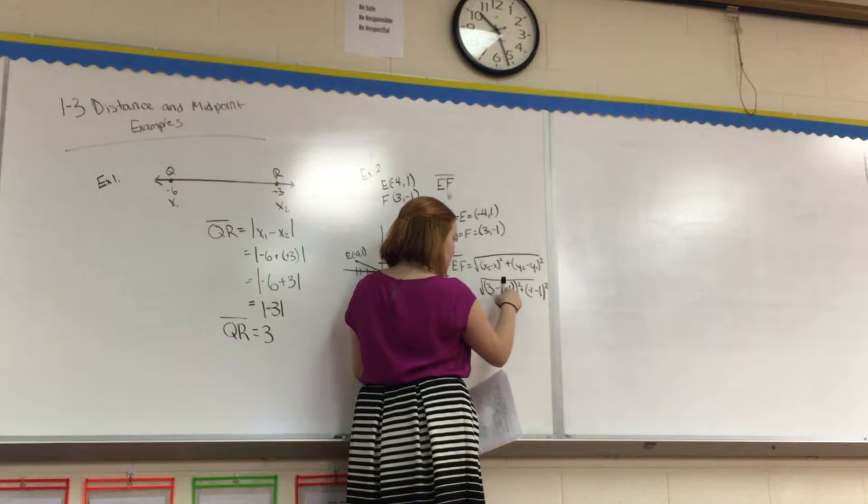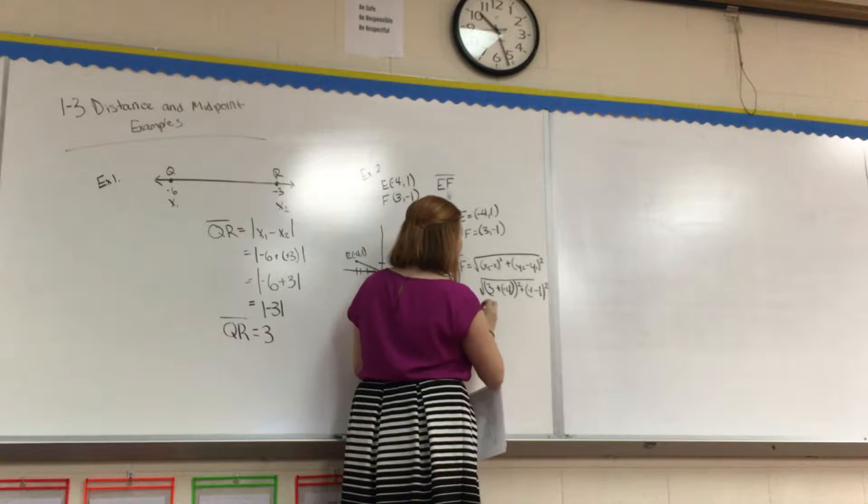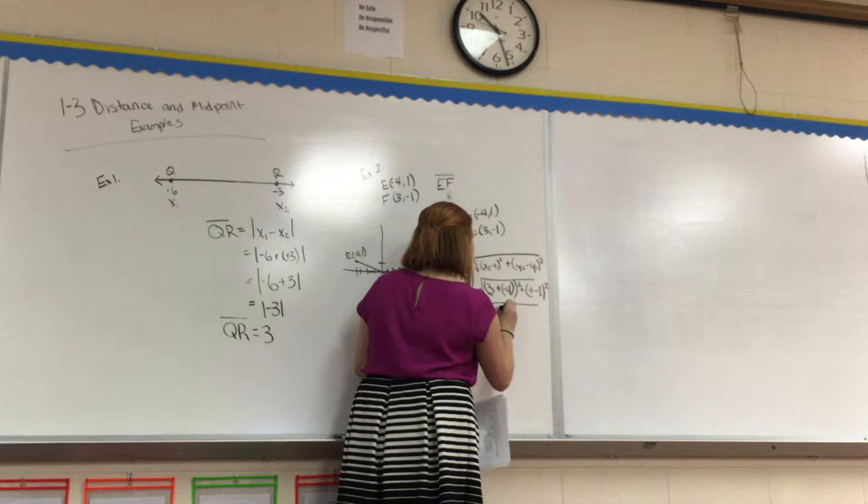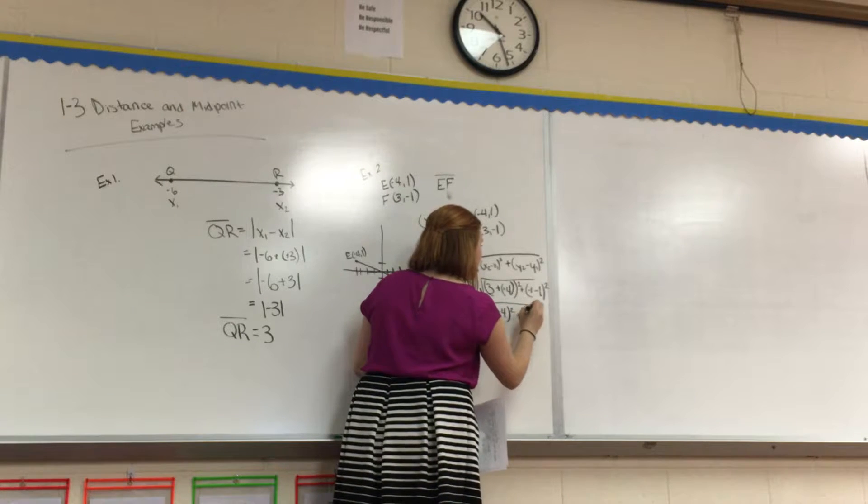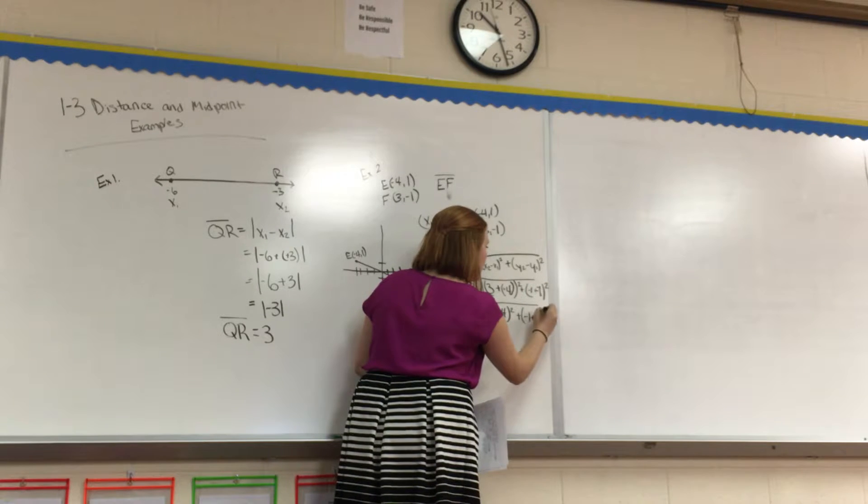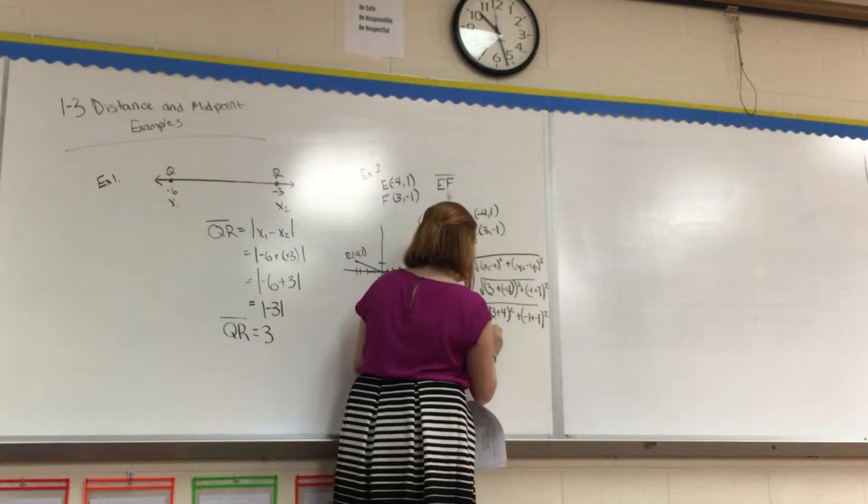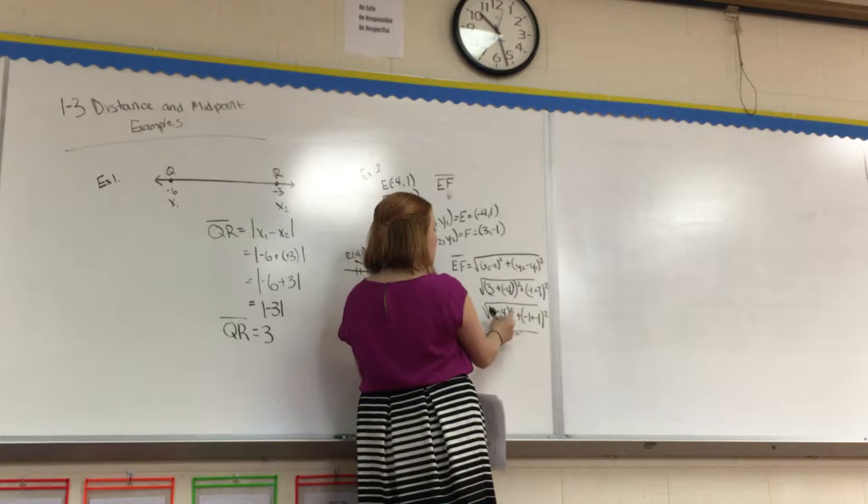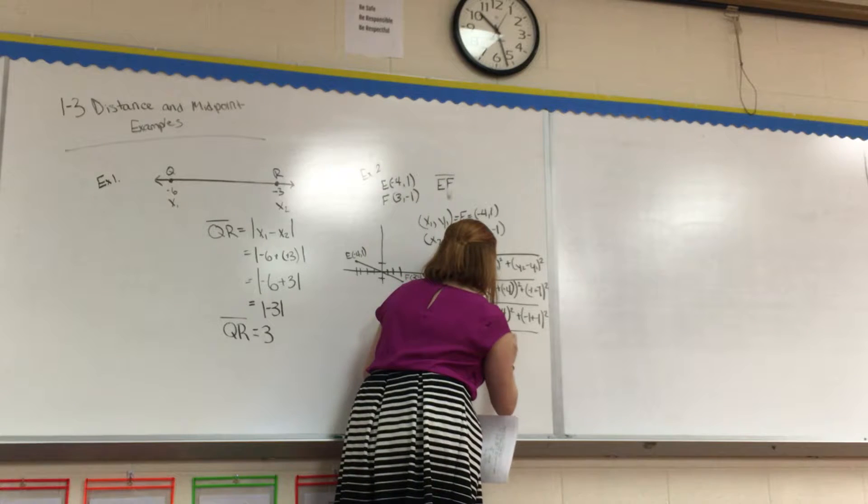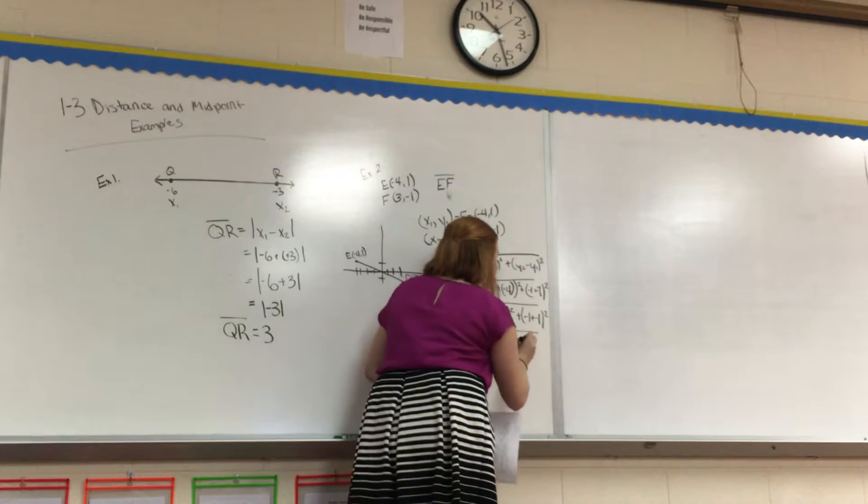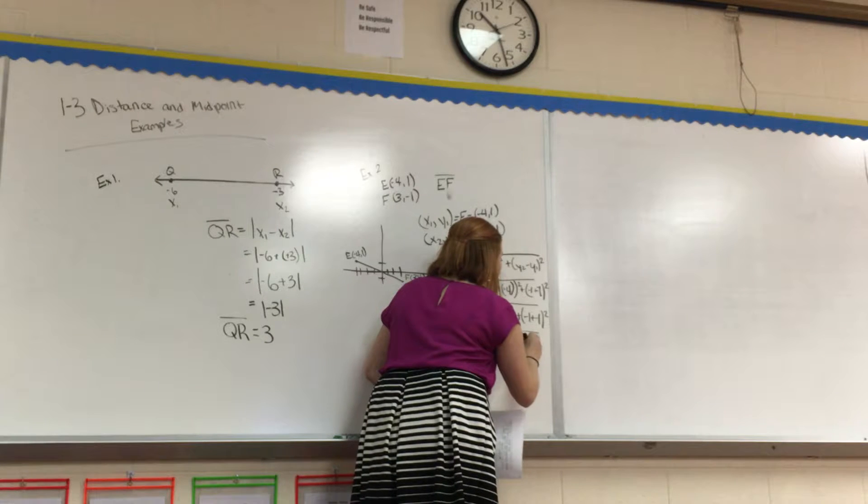Okay, we do the 2 stick. 2 negatives equals 1 positive, so we get the square root of 3 plus 4 squared plus, we can do 2 stick here, negative 1 plus negative 1 squared. What's 3 plus 4? We have to do PEMDAS. 3 plus 4 is 7 squared plus, what's negative 1 plus negative 1? A handy-dandy negative 2 squared.